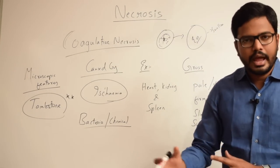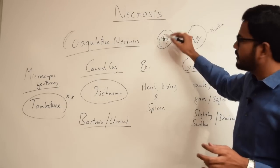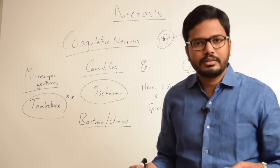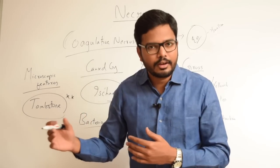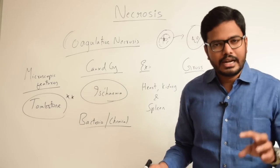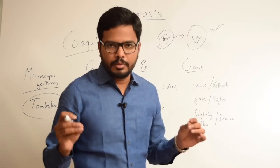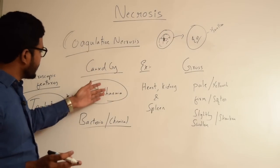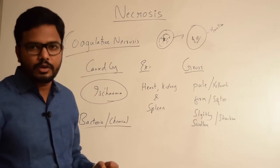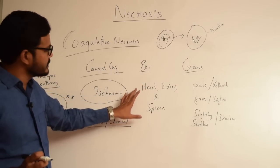The necrotized cell appears slightly swollen and the cytoplasm appears intensely eosinophilic. Most importantly, the nucleus within the necrotized cell shows pyknotic nuclei, karyorrhexis, or karyolysis. In summary, coagulative necrosis is the most common type. It's mainly caused by ischemia or cessation of blood flow, or even bacterial and chemical agents. Various organs where we encounter coagulative necrosis are heart, kidney, and spleen.